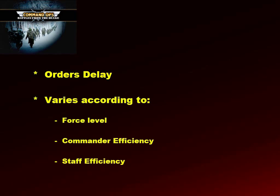The delay also varies according to the efficiencies of the commander and staff at each level — good commanders with good staff can get things moving a lot quicker. Additionally, motorised units process orders quicker than foot units, because they have more radios and being mobile can organise themselves a lot quicker.